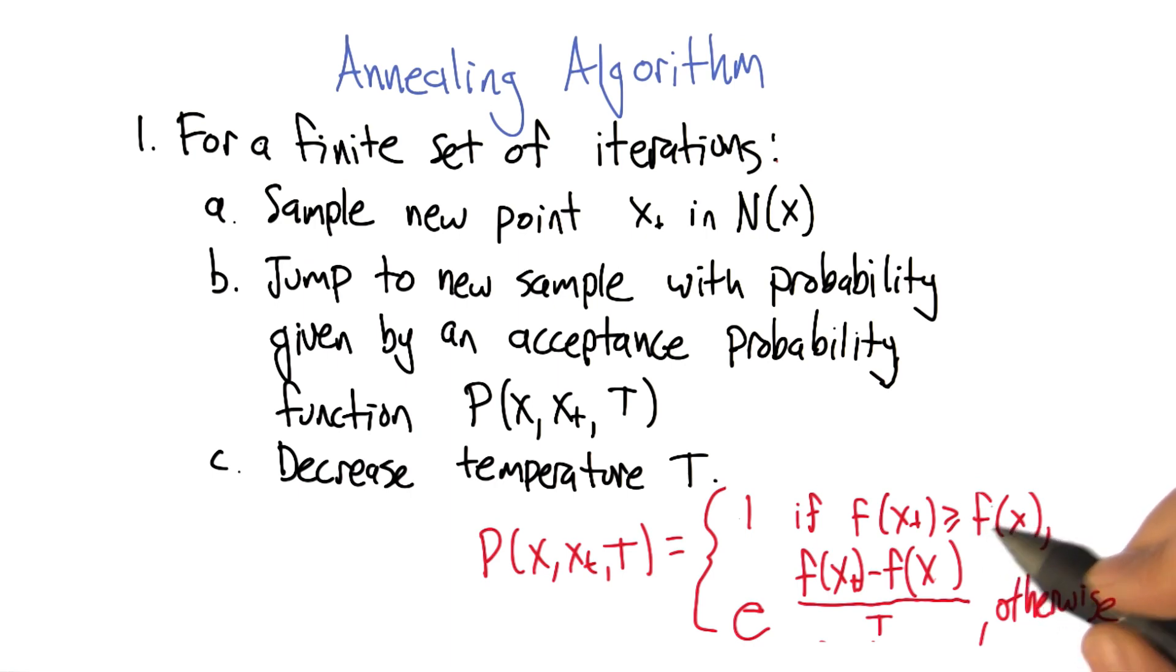But what if it's not an improvement? Well, if it's not an improvement, we're going to look at the fitness difference between the point that we're evaluating and the point where we are now, look at the difference between those two, divide that by the temperature, take e to that, and interpret that as a probability. And we either make the move or not with that probability.